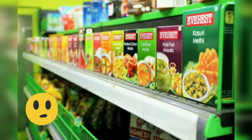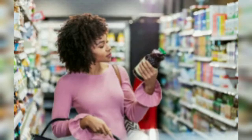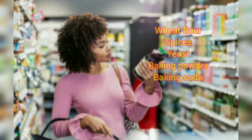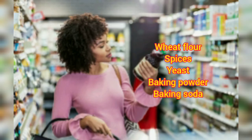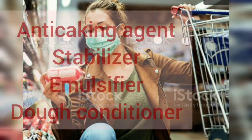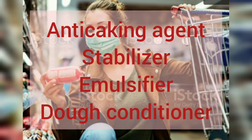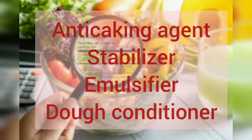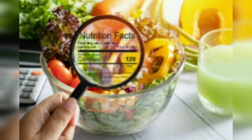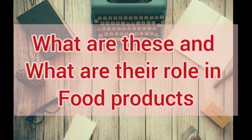When you buy some food product and check the list of ingredients, you're familiar with some ingredients like wheat flour, spices, etc. But some ingredients or additives are not familiar — these are like anti-caking agents, acidity regulators, stabilizers, emulsifiers, and many more. In this video, I am explaining all of them and their roles in food products.